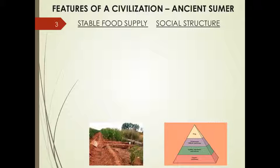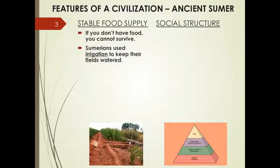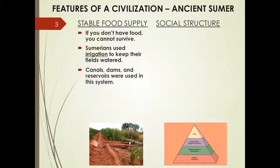The first thing these Sumerians were able to accomplish for themselves was a stable food supply. If you don't have food, you can't survive, and you cannot stay in one place if you are constantly scavenging for food. The Sumerians used irrigation to keep their fields watered — irrigation is a vocabulary word meaning taking water from where it is to where it's needed. They used canals, dams, and reservoirs in their systems, and the picture at the bottom shows you some canals.